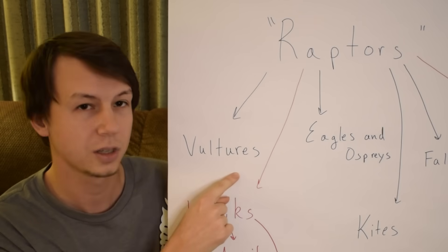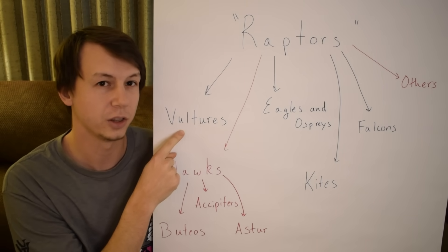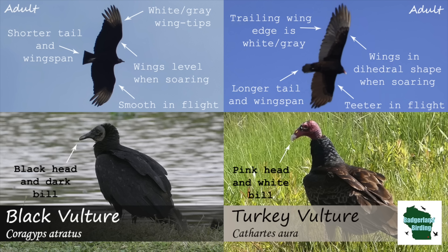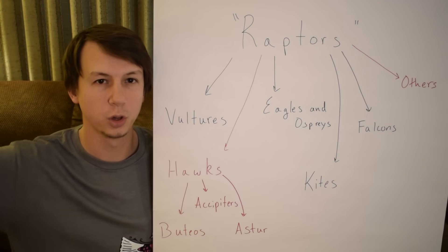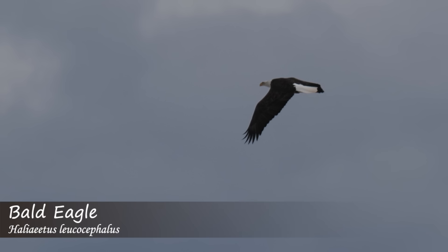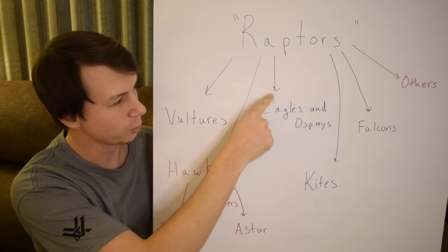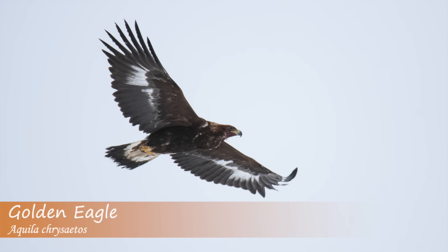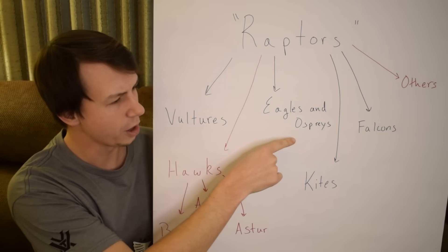You have the vultures, which normally fly with a dihedral wing shape — that V-shaped pattern. The two you see in the U.S. are the black vulture and the turkey vulture. We have a whole video on identification between those two if you want to learn more. Then you have your eagles and ospreys. Eagles have super long wings; the bald eagle flies flat and the golden eagle has that dihedral pattern. And then you also have the ospreys — they are fish specialists, normally found by water, brown and white, flying with a very specific shape.